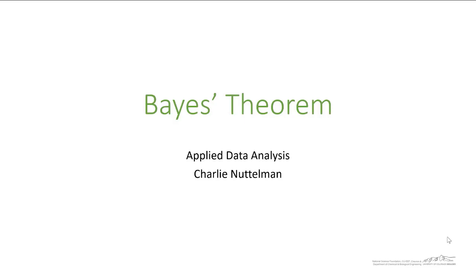So now we're going to talk about something known as Bayes' Theorem. Bayes' Theorem relates to what we've already talked about with the total probability rule and the multiplication rule. It just kind of combines the two of them. And some of the examples we've done in previous screencasts are actually using Bayes' Theorem indirectly.